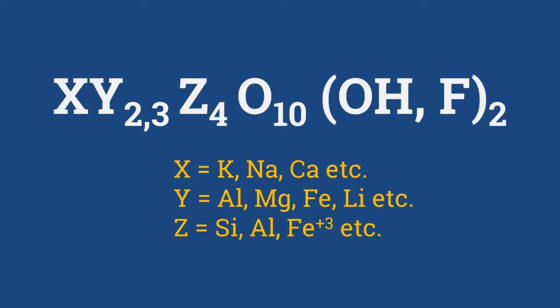Y is mainly aluminium and sometimes magnesium, iron, or lithium, and Z is mostly iron, aluminium, or Fe3+.